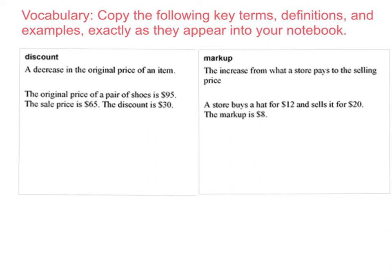Copy the following key terms, definitions, and examples exactly as they appear into your notebook. A discount is a decrease in the original price of an item. Be sure to copy the definition and also copy this example. A markup is the increase from what a store pays to the selling price. There's also an example to go along with that definition.